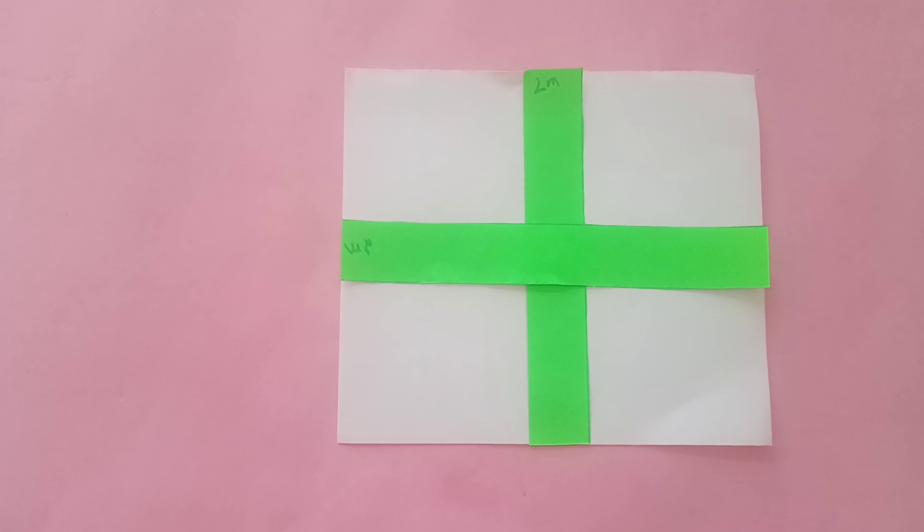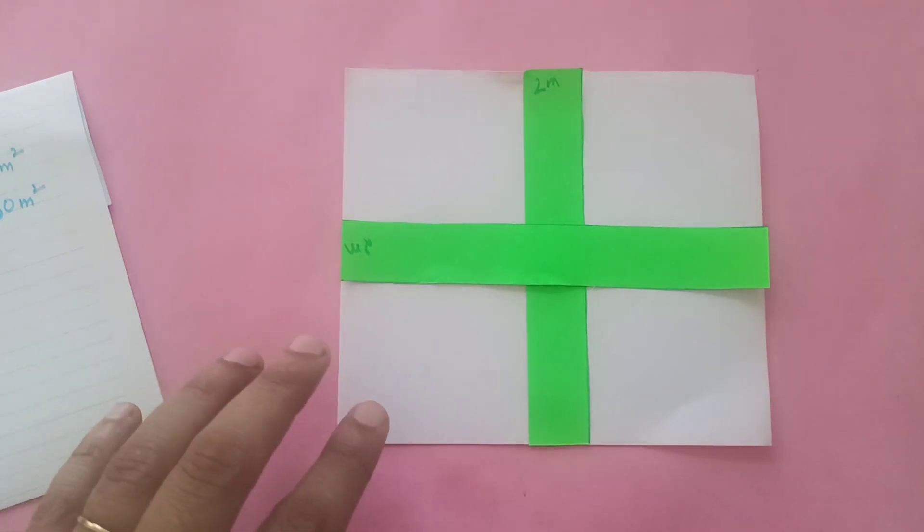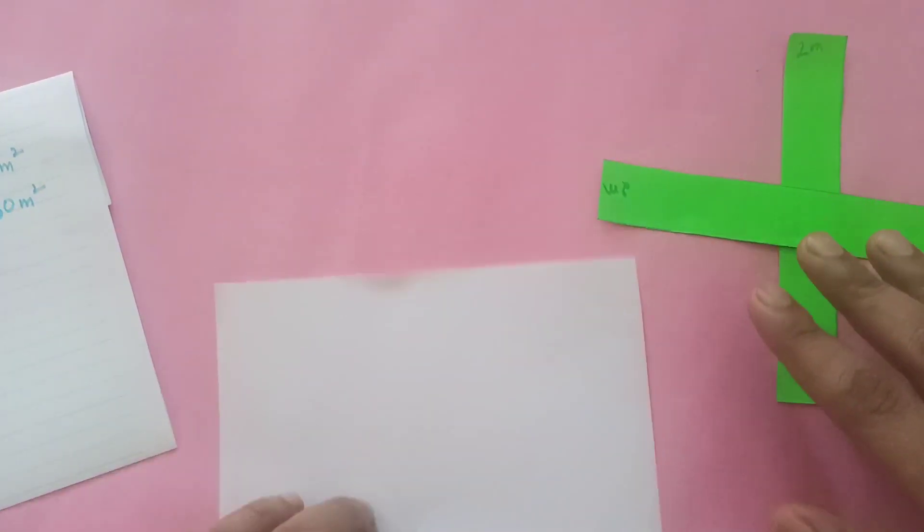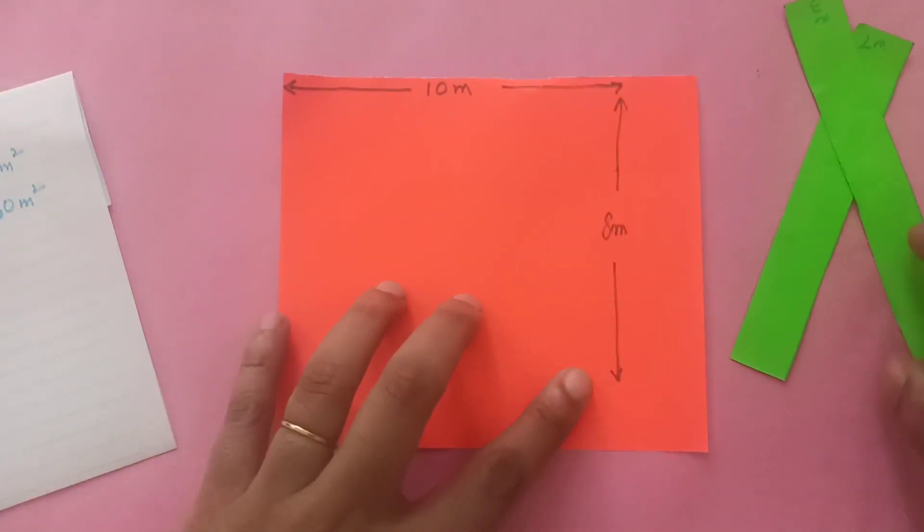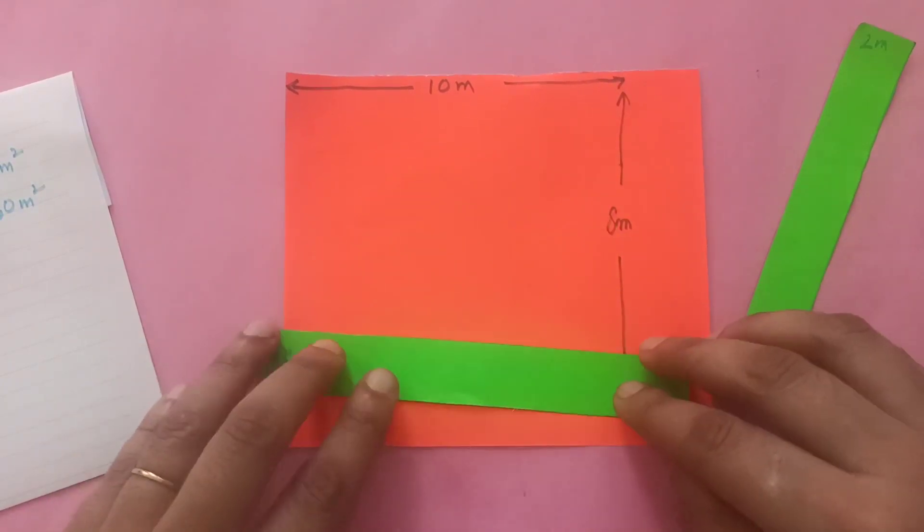So there are many ways to do this question, so I'll be discussing a few of them. Let's look at the first way. In the first way we are simply going to move the paths to the corner.